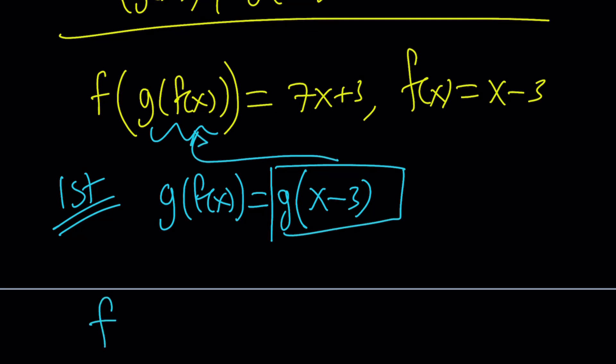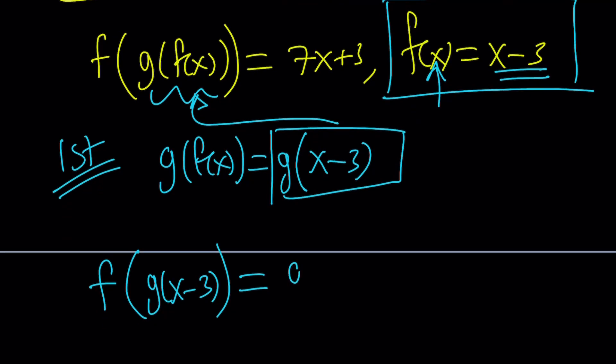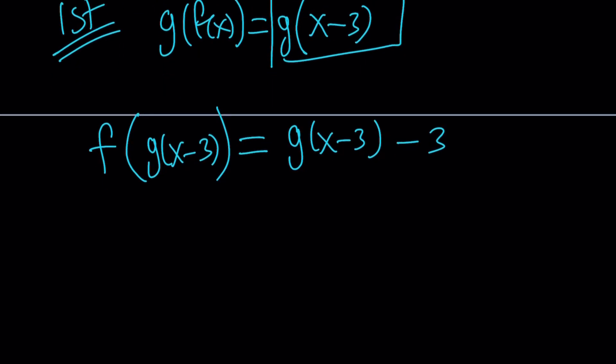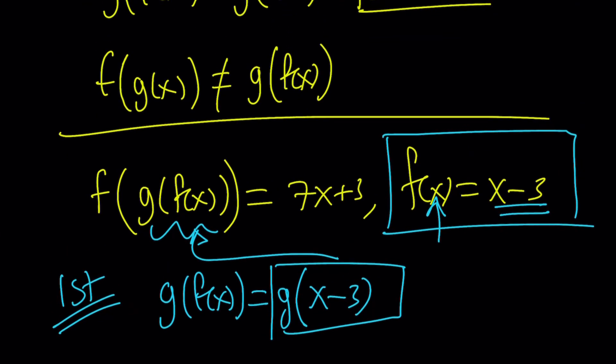And what is g of x minus 3? I don't know what g is, right? So what I need to do now is I need to go ahead and plug it in here. So that's going to give me f of g of x minus 3, and then I kind of have to look at the definition of f because I know f of x is x minus 3. So whatever the argument is, f says subtract 3 from it. So it's going to take this as an input and subtract 3 from it, and that's going to be our output. Make sense?